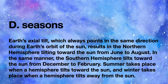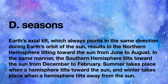D seasons. Earth's axial tilt, which always points in the same direction during earth's orbit of the Sun, results in the northern hemisphere tilting toward the Sun from June to August. In the same manner, the southern hemisphere tilts toward the Sun from December to February. Summer takes place when a hemisphere tilts toward the Sun, and winter takes place when a hemisphere tilts away from the Sun.